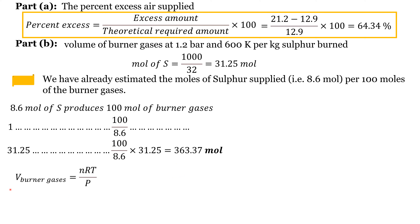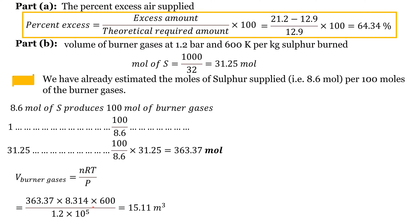Now we find the volume of burner gases. Total moles of burner gas are known, and pressure and temperature are given, so we apply the ideal gas equation. After putting in all values, the volume comes out as 15.11 cubic meters.